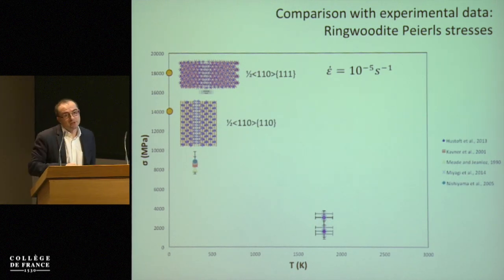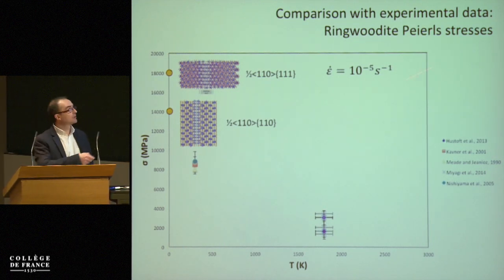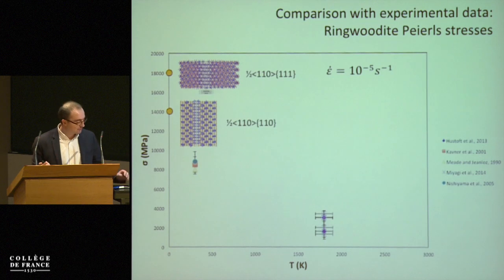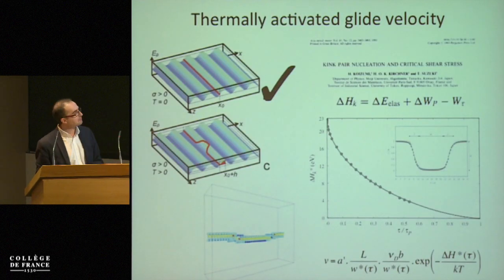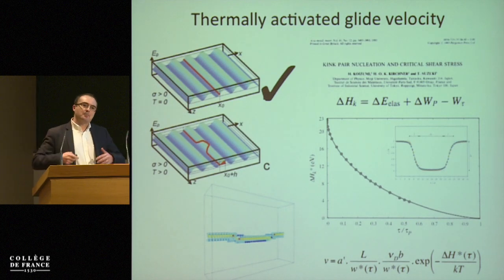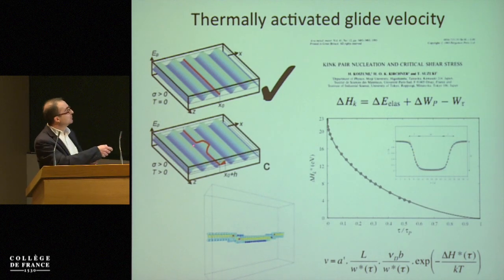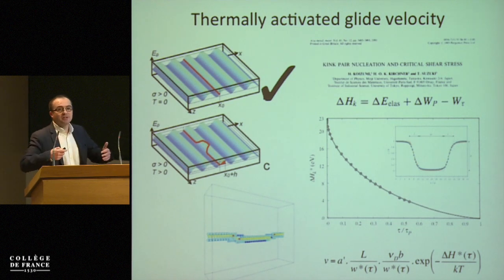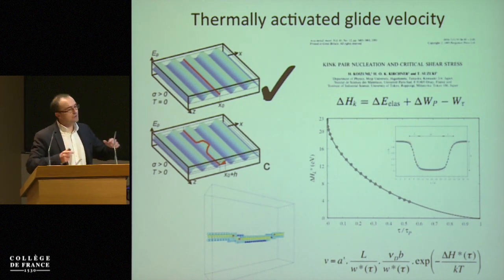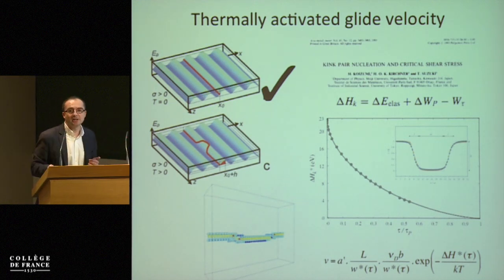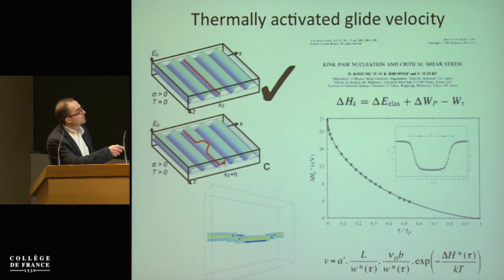To say something about how stress evolves with temperature, we first need to come back to the mechanism. When you have both temperature and stress, the dislocation no longer moves as a straight line — instead it moves by nucleation of a kind of bulge. With the conjugate effect of temperature and stress, the line starts to bulge over the Peierls potential. We call this a kink-pair mechanism: the kink corresponds to the small part of the line lying on top of the potential.